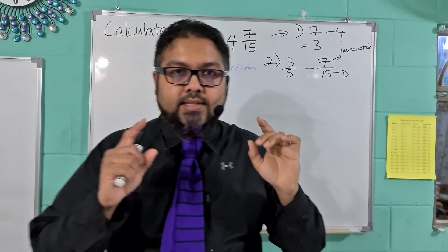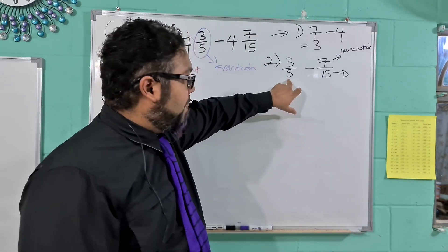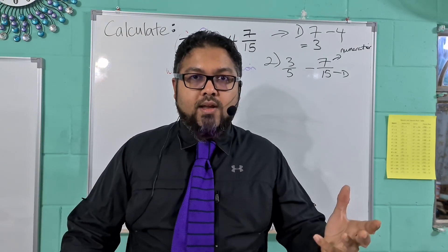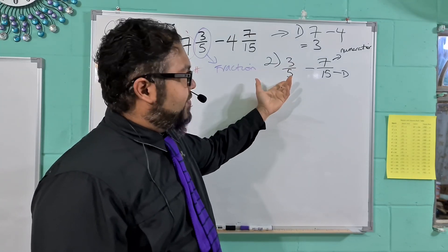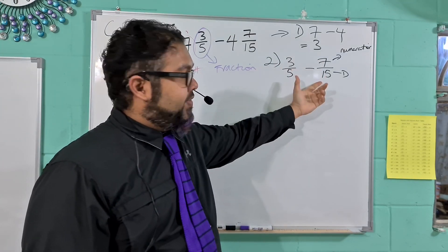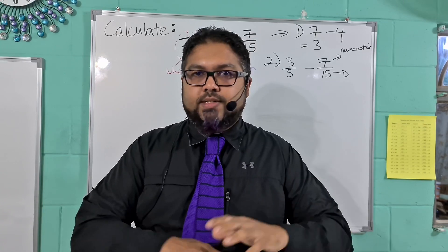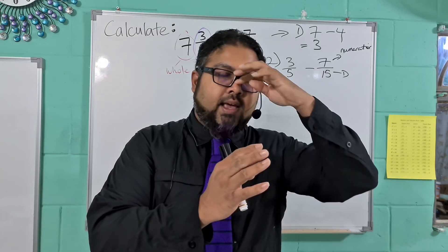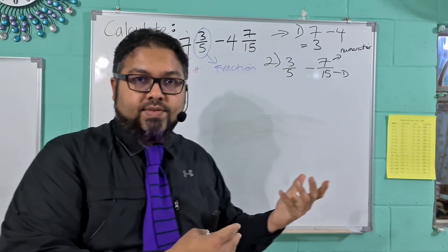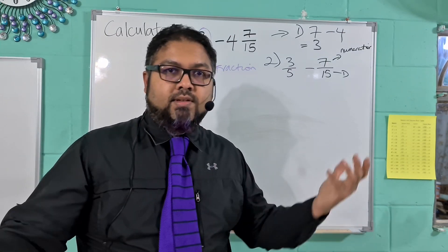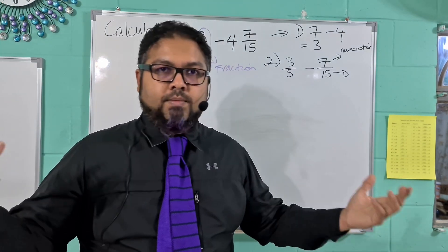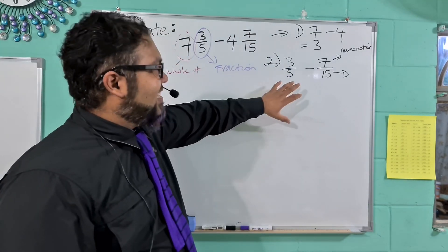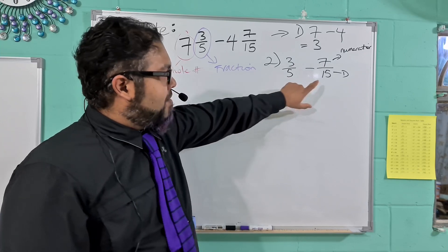We have 3 over 5 minus 7 over 15. Now if the denominators, which is the base number, if that was the same, we own like Boa and Duane. If this was like 9 over 15 and this was 7 over 15, anything with the same denominator, we just minus, subtract, we just work as normal. We just use the numerator, the top number, and if it was 9 over 15 minus 7 over 15, 9 minus 7, 2 over 15, easy peasy, we're done.